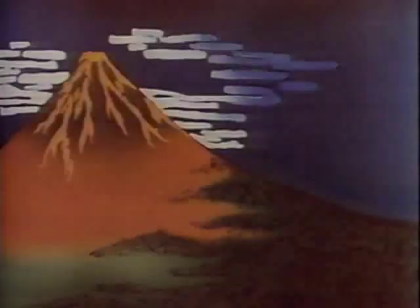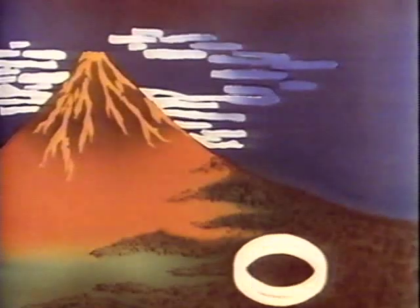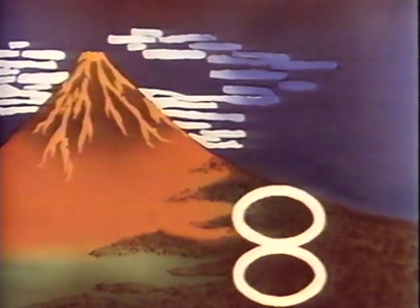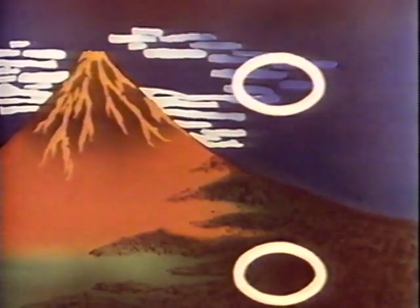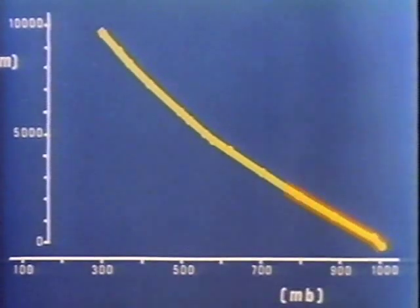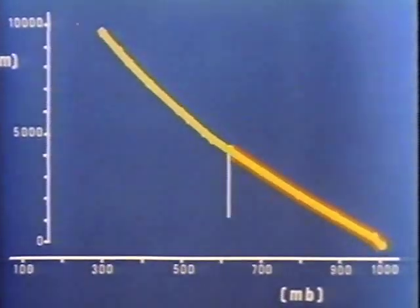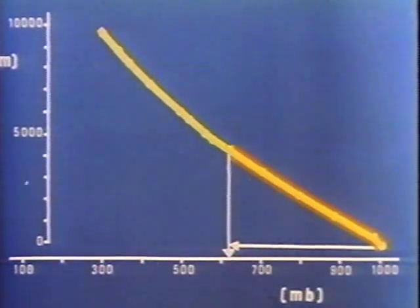What would happen if a large mass or parcel of air near the ground would suddenly rise to a higher altitude? The computer has already told us that atmospheric pressure and temperature decrease as we go higher.